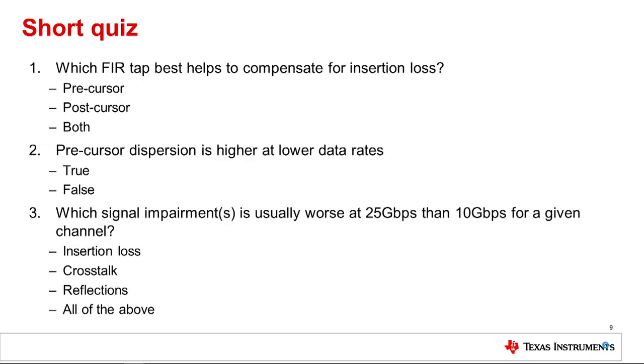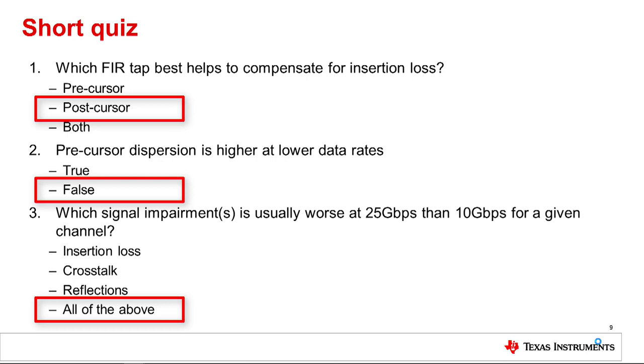To refresh your mind on what we have discussed, let's have a short quiz. Which FIR tap best helps to compensate for insertion loss, precursor, postcursor, or both? The answer is postcursor. Precursor dispersion is higher at lower data rates, true or false? The answer is false, precursor dispersion is higher at higher data rates. Which signal impairment is usually worse at 25 gigabits per second than 10 gigabits per second for a given channel? Insertion loss, crosstalk, reflections, or all of the above? The answer is all of the above.